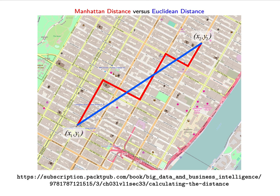Let's give a geometric interpretation of these norms. Here is a map of Manhattan, New York. If we have two points — one at the lower left and one at the upper right — the Euclidean distance between them is the blue line, computed as the square root of the sum of squares. However, if we were walking along city streets in Manhattan, we cannot fly over buildings; we can only walk along city blocks. The total length of the red path is the Manhattan distance. When p equals 1, you see the red line; when p equals 2, the blue line.